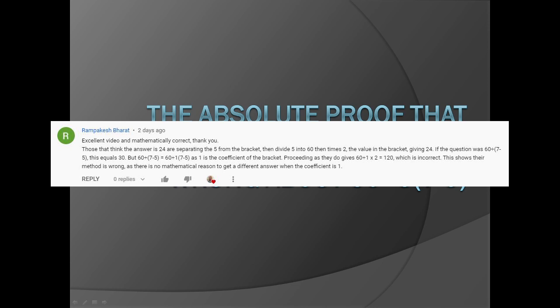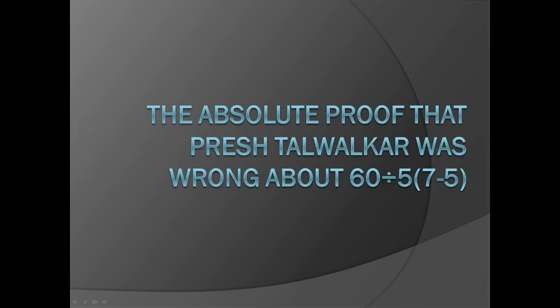I have been able to come up with a definitive proof that Presh Talwalkar's method of resolving 60÷5(7-5) is objectively wrong. As a refresher,